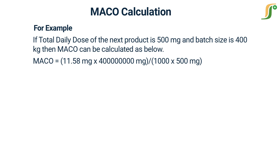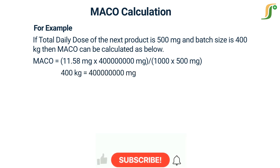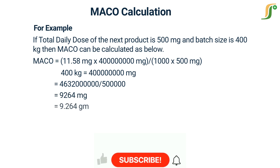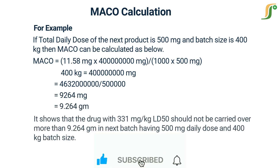Here, 400 kilograms equals 400 million milligrams. The result is: MACO = 9,264 milligrams = 9.264 grams. This means the drug with an LD50 of 331 mg/kg should not carry over more than 9.264 grams into the next batch, which has a 500 mg daily dose and a 400 kg batch size.